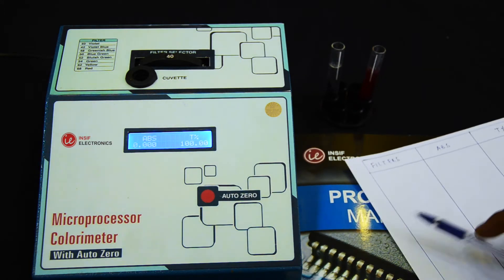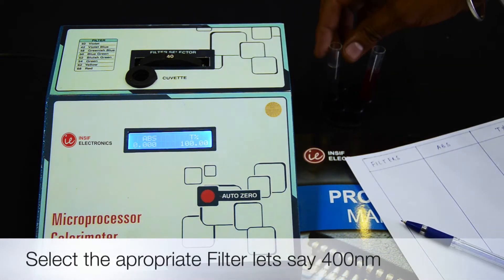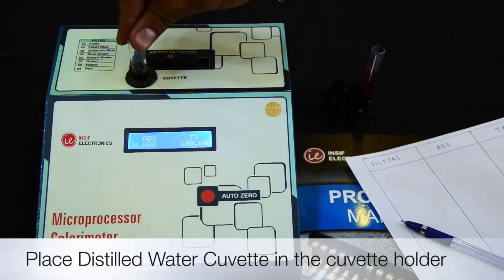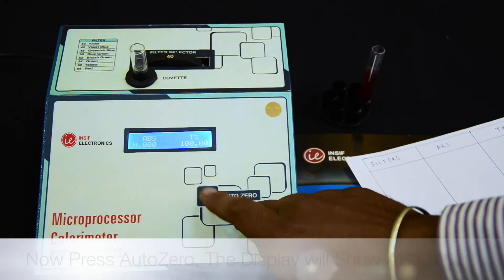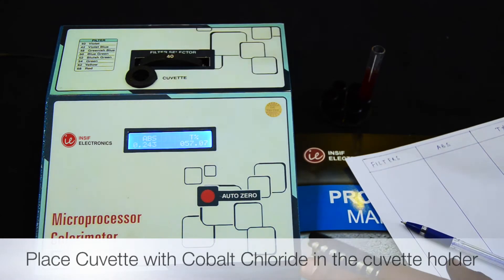Let's see how to operate. Select the appropriate filter, let's say 400 nanometers, and place the distilled water cuvette in the cuvette holder. Now press AutoZero, remove the cuvette, and place the cuvette with the sample to be tested.